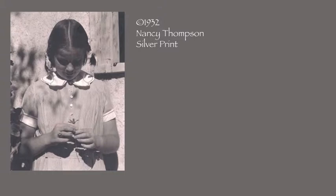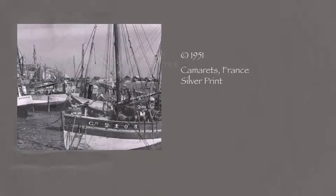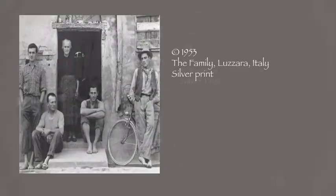After he took portraits in New York City, he started to travel to Mexico to take more pictures. One of his most famous prints was this church that he took in 1944. Once Paul Strand was married, he decided to go to France to take many descriptive pictures as shown.